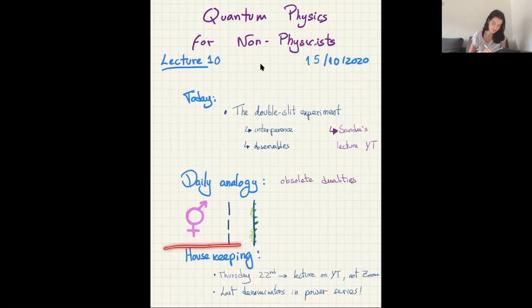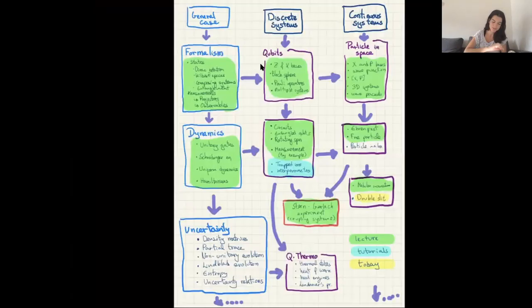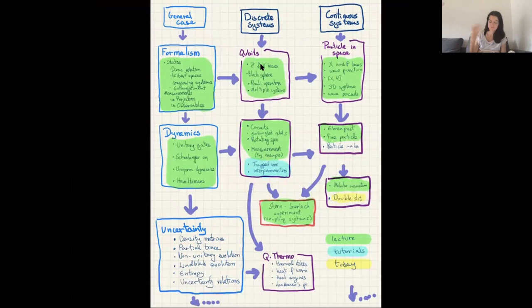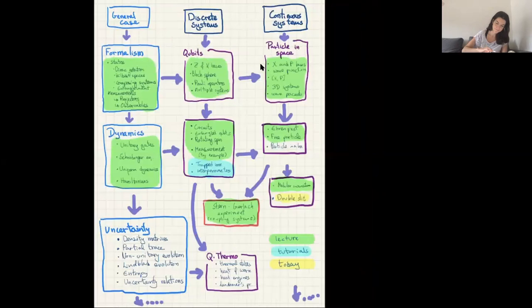You can use this to explain gender to your physicist friends, or vice versa. Now let's recap where we are in the lecture tree. We've done almost everything in the part before we reach uncertainty. On blue are things we've done in tutorials and will keep doing. Today we'll do the double slit, possibly continuing next week. The other thing we'll do next week is a particle in a potential — not a free particle, but in some kind of square potential. After that, we can finally start with uncertainty.